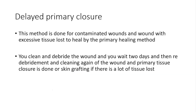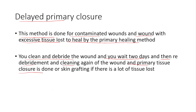If the wound is large with a lot of soft tissue loss, or located in an area where appearance matters, we use delayed primary closure. This method is done for contaminated wounds and wounds with excessive tissue loss to allow healing by the primary method. We clean and debride the wound, wait two days, then re-debride and re-clean again, and finally perform primary tissue closure with sutures — or skin grafting if there is extensive soft tissue loss.